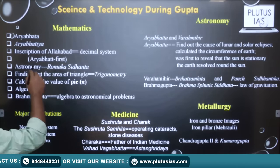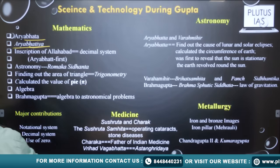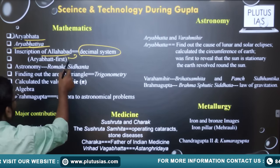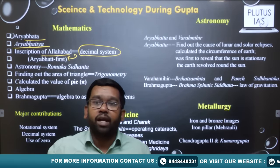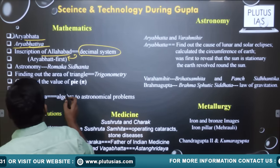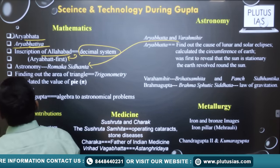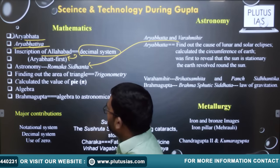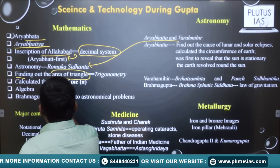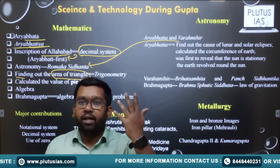In mathematics, Aryabhata is a very famous person who wrote a book called Aryabhatiya. According to the Allahabad inscription, the decimal system was first used by Aryabhata — he is the first person in the Indian subcontinent to use the decimal system. The Romaka Siddhanta, written by Brahmagupta, was inspired from astronomy. Aryabhata is the first person who found out how to calculate the area of a triangle, which was used in trigonometry in later periods.